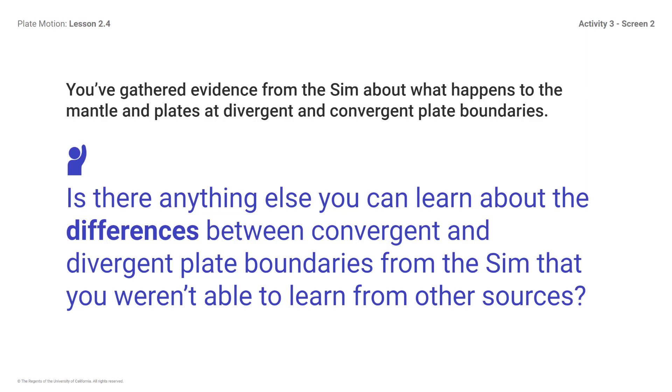You've gathered evidence from the Sim about what happens to the mantle and plates at divergent and convergent plate boundaries. Is there anything else you can learn about the differences between convergent and divergent plate boundaries from the Sim that you weren't able to learn from other resources? Notice that the Sim shows patterns of earthquakes and volcanoes.